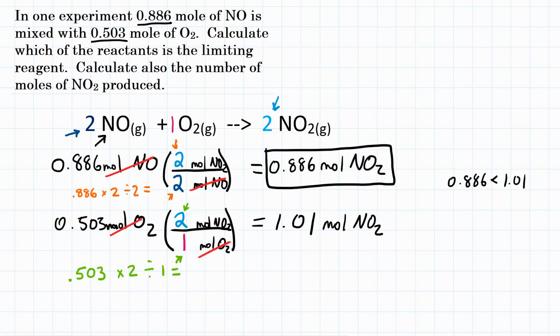And then finally, what is our limiting reagent, then? Well, that's going to be NO. Our limiting reagent or limiting reactant is going to be NO, because here is where we actually got our answer, and that was using NO, 0.886 moles of it. So final answer, limiting reagent is NO, and the number of moles of NO2 produced is 0.886.